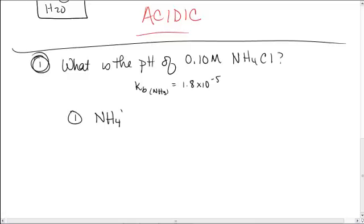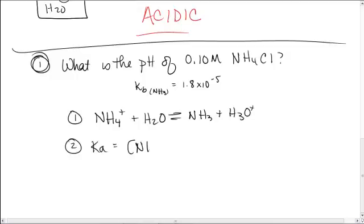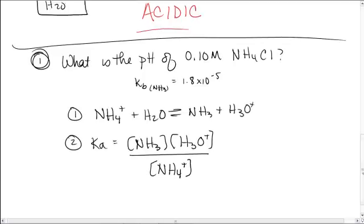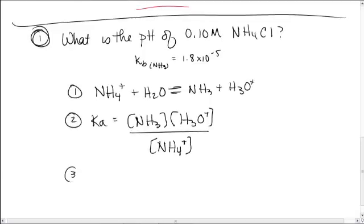The ammonium is the part of that salt that's going to impact our pH. So, we're going to write an equation with that in there. We can go ahead and write a Ka for that as well. Again, you know, same stuff as we've been doing. And again, H3O+ and H+ are the same.